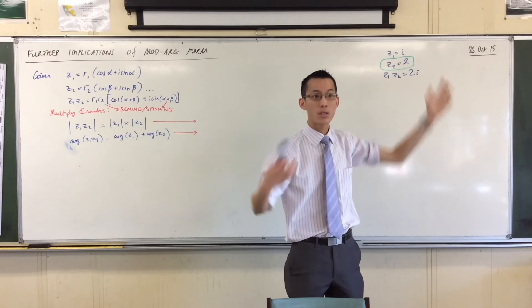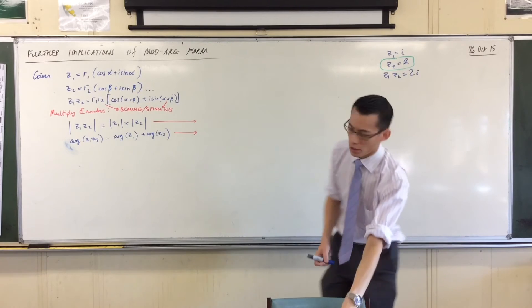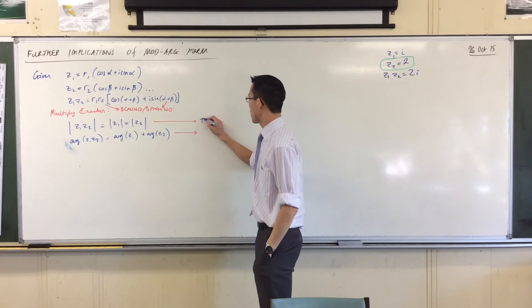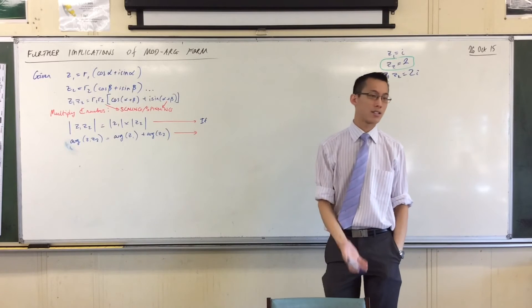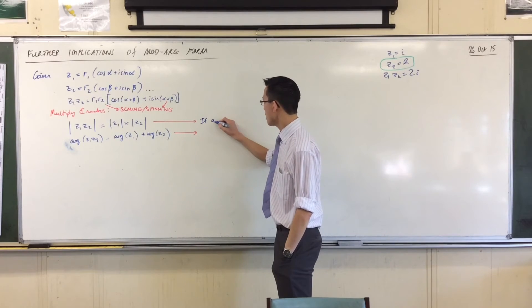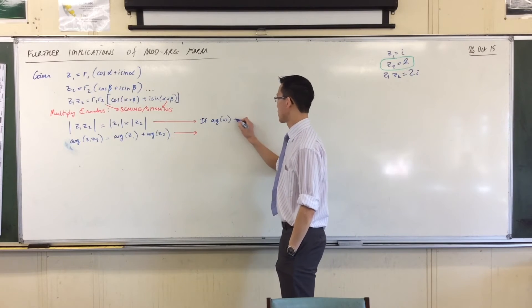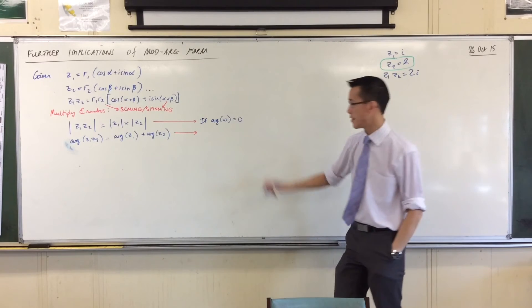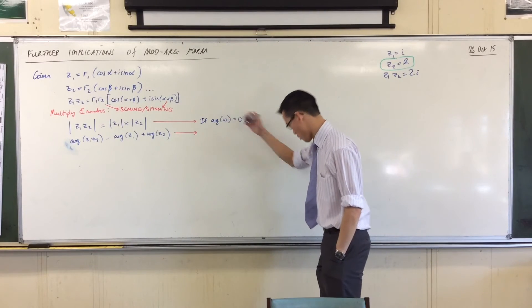Does that make sense? So here's my particular example. Let's introduce, say, let's call it Omega. If the argument of some number is zero, then the argument of anything times Omega will be unchanged.